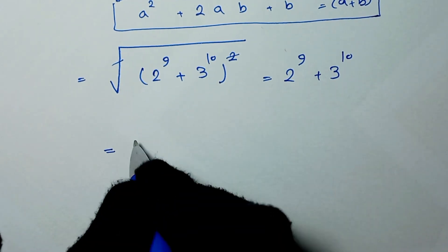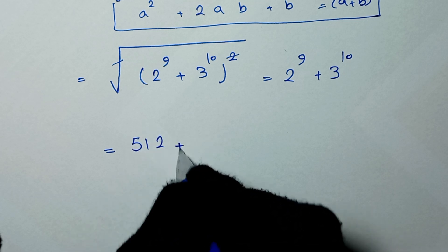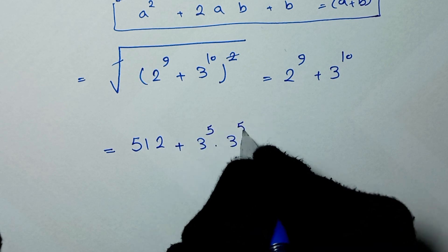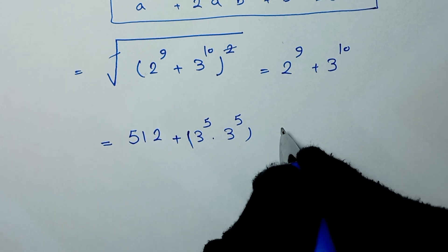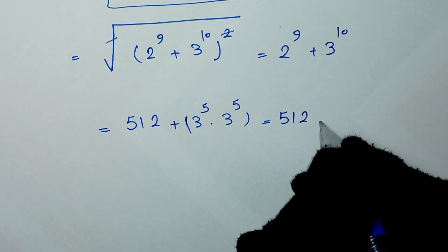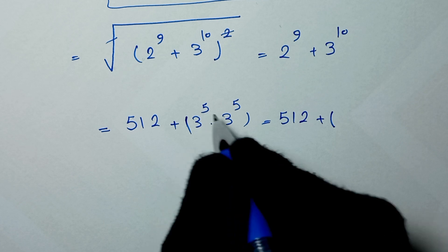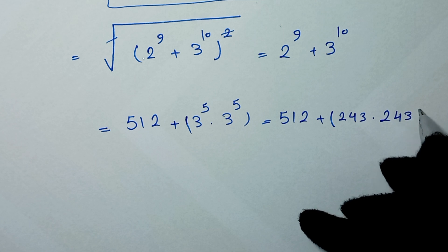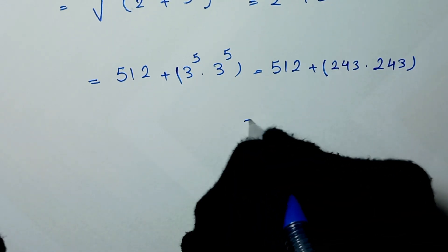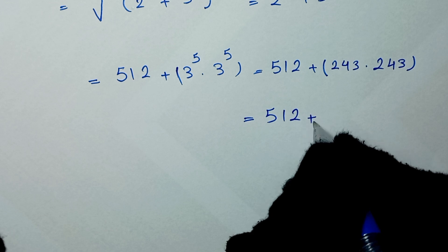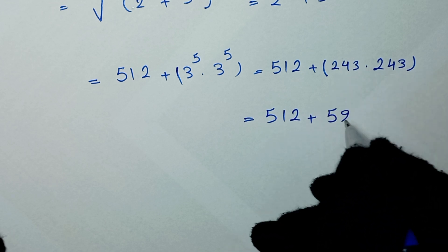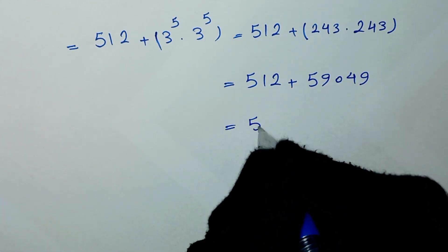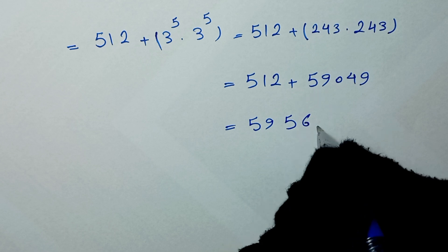From here, 2 to the power of 9 is 512. We write 3 to the power of 10 as 3 to the power of 5 times 3 to the power of 5, which is 243 times 243, equal to 59,049. So our final answer is 512 plus 59,049, which equals 59,561.